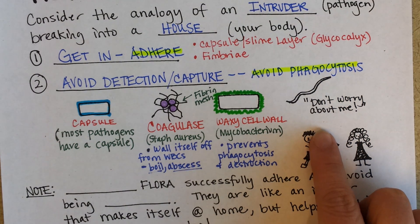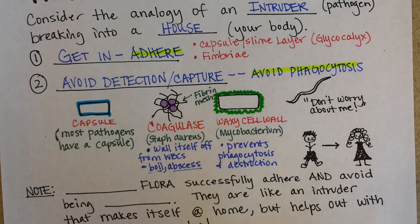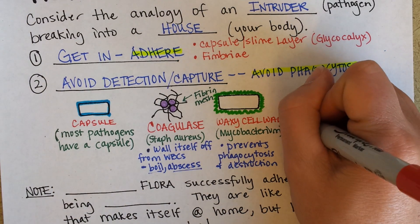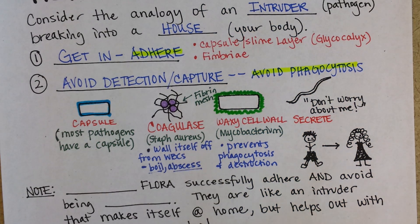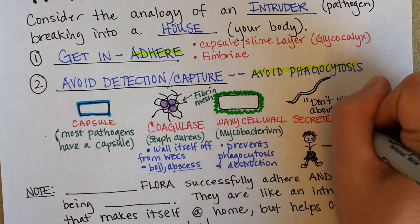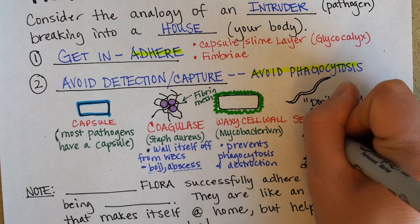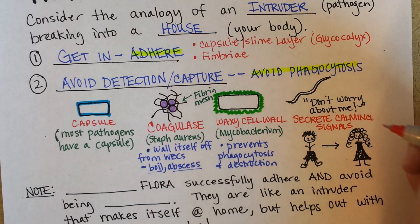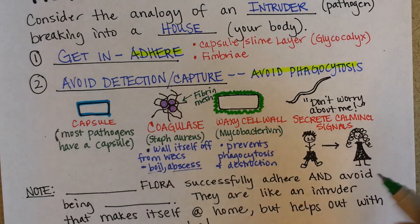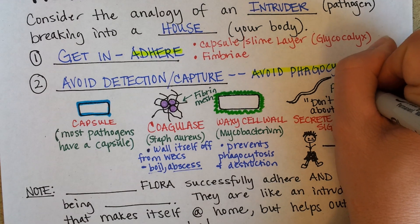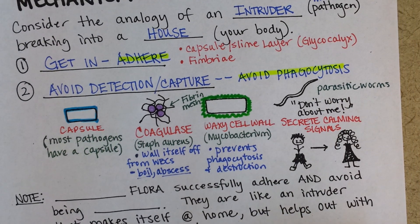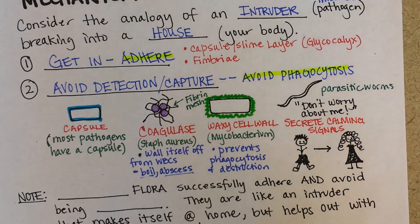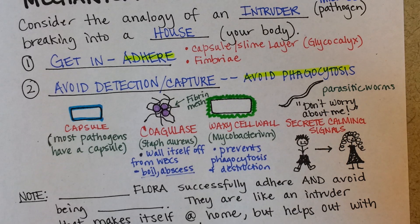Yet another example involves parasitic worms, which secrete calming signals — signals that tell your immune system to not overreact. This may be one of the reasons why people infected with parasitic worms are not very likely to have allergies, because their entire immune system is calmed down and not overreacting, as it does in allergies.